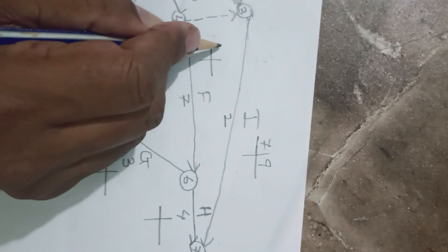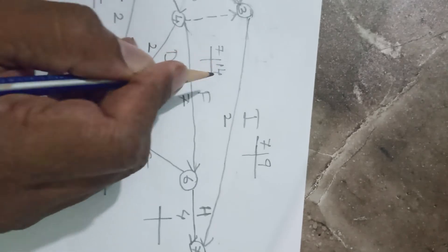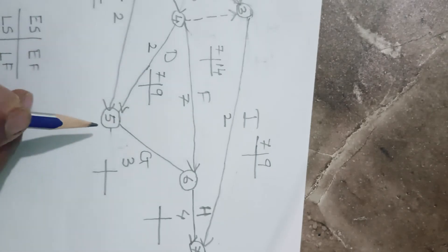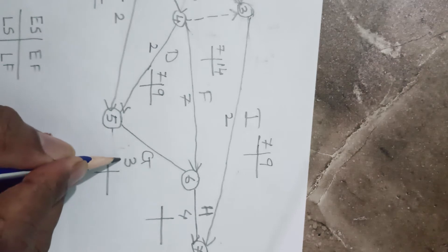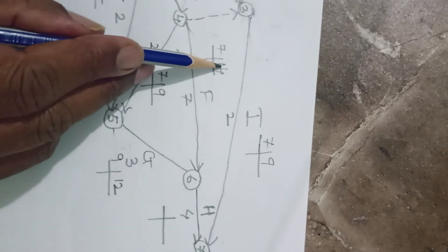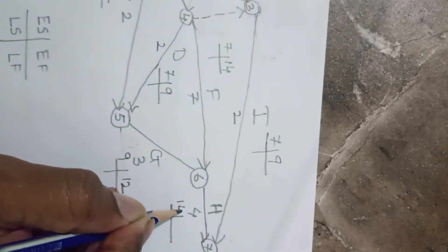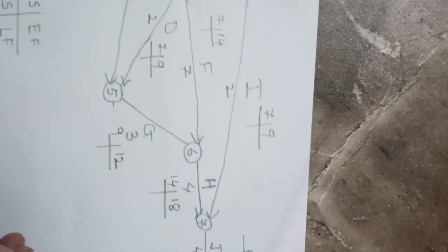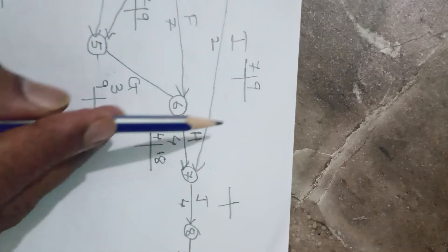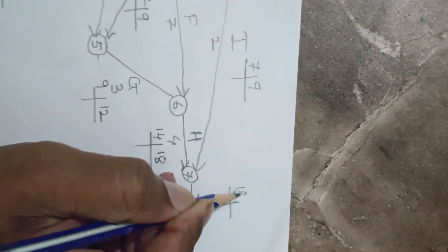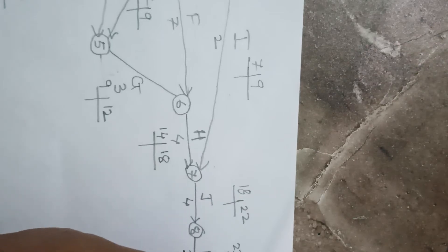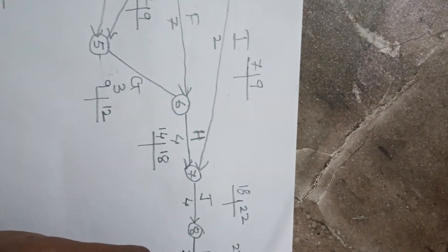This 7 also comes for F: 7 plus 7 equals 14. This 7 also comes for D: 7 plus 2 equals 9. For G, both 2 and 9 arrive, so we take the higher value 9; 9 plus 3 equals 12. For H, values 14 and 12 arrive, the higher is 14, so 14 plus 4 equals 18. For J, values 9 and 18 arrive, we take the higher 18; 18 plus 4 equals 22. Then 22 plus 1 equals 23.